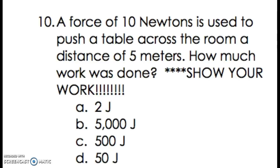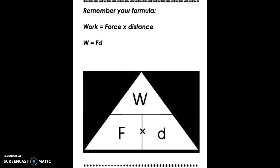Question 10: A force of 10 newtons is used to push a table across the room a distance of 5 meters. How much work was done? Show your work. A. 2 joules, B. 5,000 joules, C. 500 joules, D. 50 joules. Remember your formula: Work equals force times distance. W = F × D.